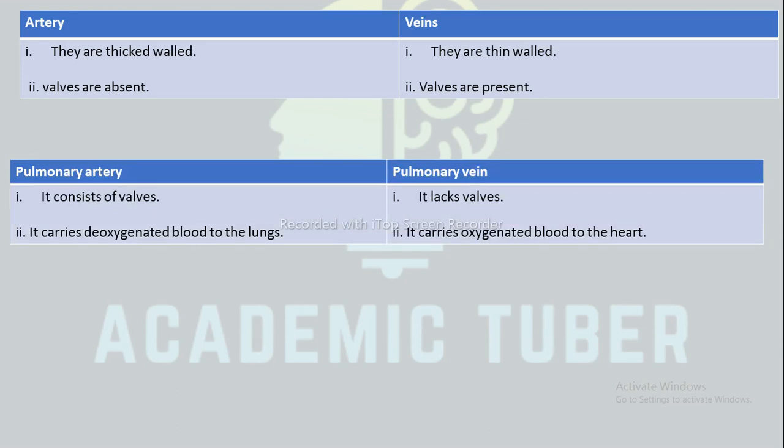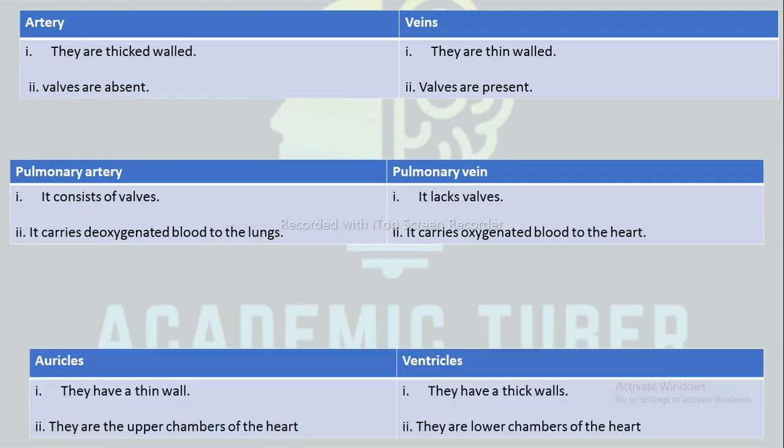The next difference is between pulmonary artery and pulmonary veins. Pulmonary artery has valves, whereas pulmonary veins lack valves. Pulmonary artery carries deoxygenated blood to the lungs, whereas pulmonary veins carry oxygenated blood to the heart.